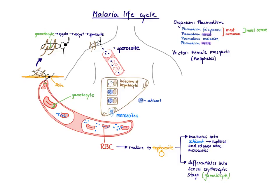Inside the hepatocytes, the sporozoites will asexually replicate and form a replication stage called the schizont. At one point the hepatocyte is going to rupture, and the schizont will also rupture, releasing the so-called merozoites into the blood.